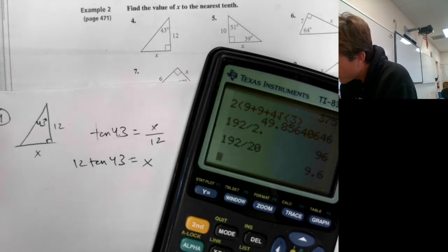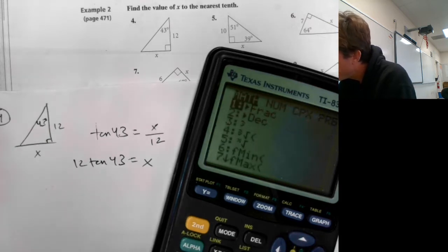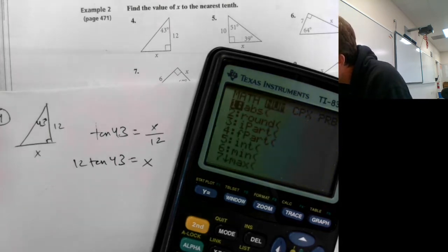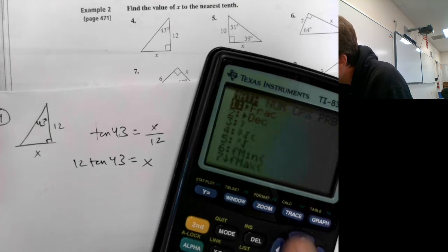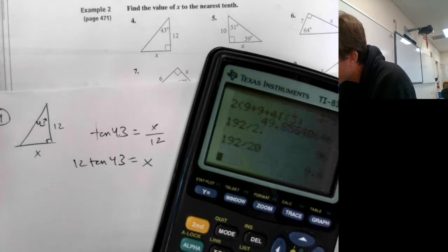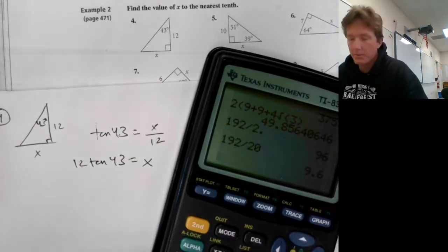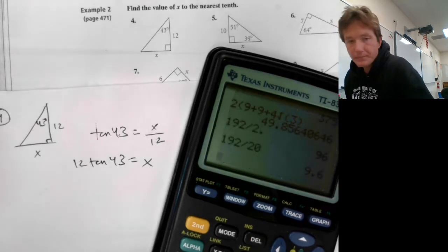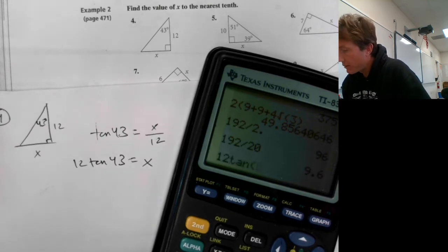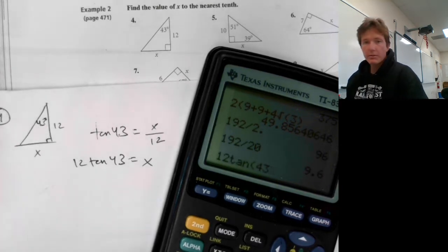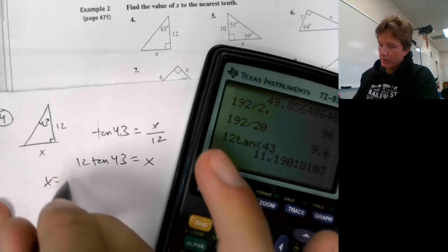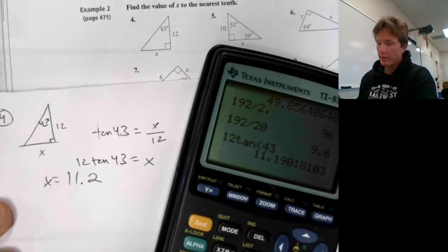Make sure that your tangent is in degrees as opposed to radians. You can check that in your calculator's mode setting — I'm in degrees, good. If you have a smart calculator like this one, press mode and make sure you're in degrees. Radians are used later on in math. So you just punch it in: 12 times tangent of 43. X equals 11.2, since we're solving to the nearest tenth.